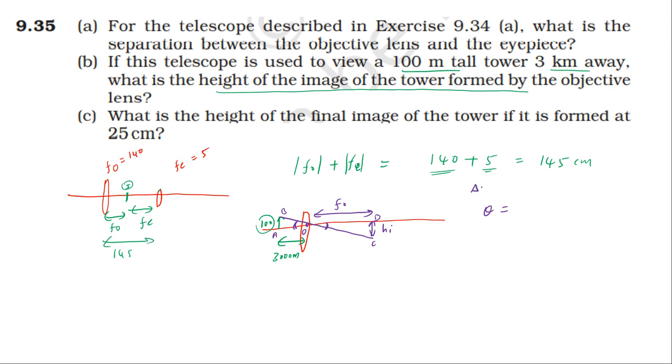In triangle ABO, opposite by adjacent, height divided by distance. Height is 100 meters, distance is 3000 meters, simply 1 by 30. Now in triangle OCD, the height of the image by distance equals the same angle, so 1 by 30 equals image height divided by 140. Therefore image height equals 140 by 3, which is approximately 4.7 meters.